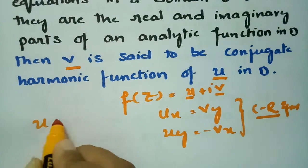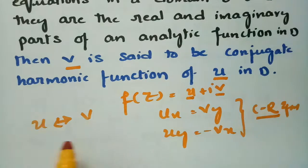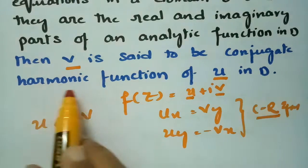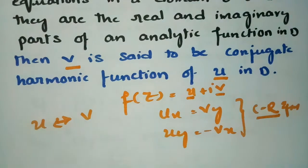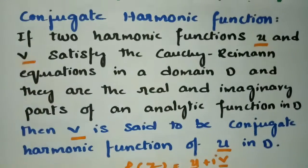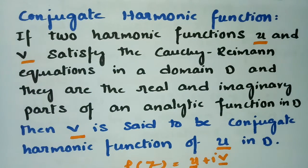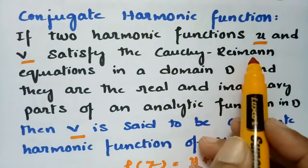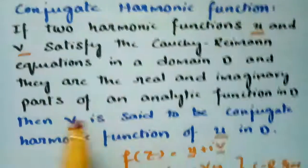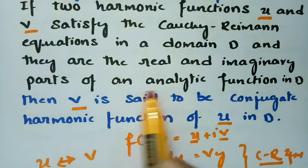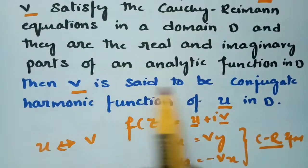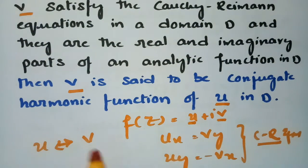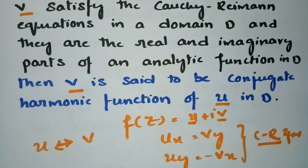So u is a conjugate function of v and v is a conjugate function of u. If two harmonic functions u and v satisfy the CR equations in a domain D and are the real and imaginary parts of an analytic function in D, then v is said to be the harmonic conjugate of u in D.